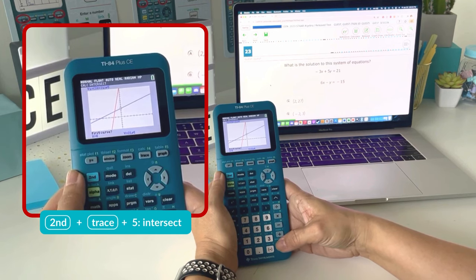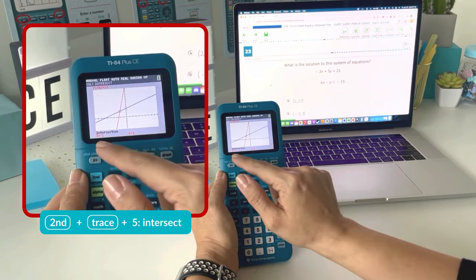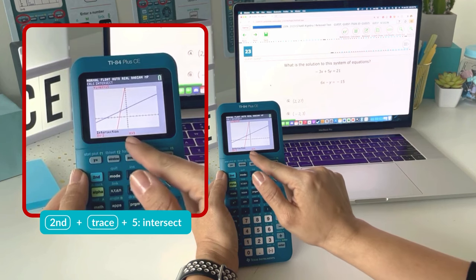I choose the first curve by just clicking enter, the second curve by clicking enter, and enter one time, and I'll find the intersection at negative 2, 3.